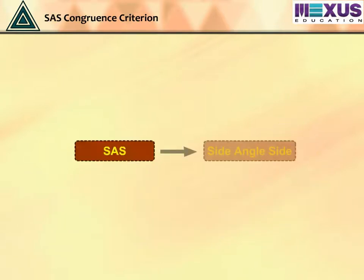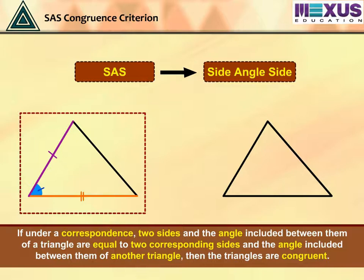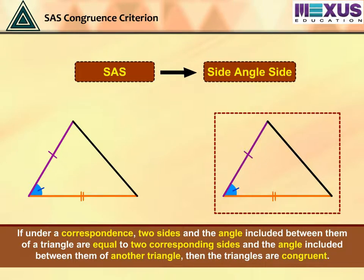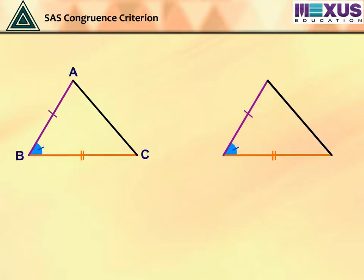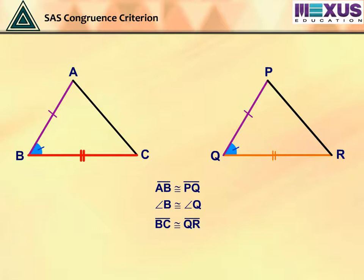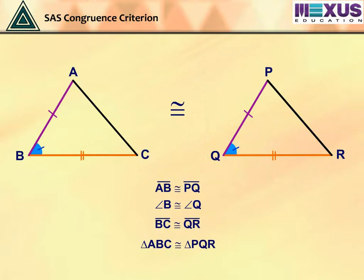The second criterion is SAS, that is, side-angle-side criterion. It states that if, under a correspondence, two sides and the angle included between them of a triangle are equal to two corresponding sides and the angle included between them of another triangle, then the triangles are congruent. For given triangle ABC and triangle PQR, we see that side AB is equal to side PQ, angle B is equal to angle Q, and side BC is equal to side QR. Therefore, by SAS criterion, we can say that triangle ABC is congruent to triangle PQR, as two corresponding sides and their included angles are congruent.